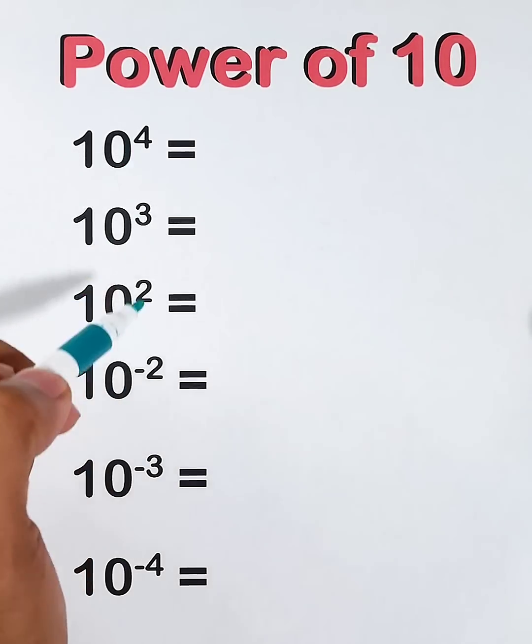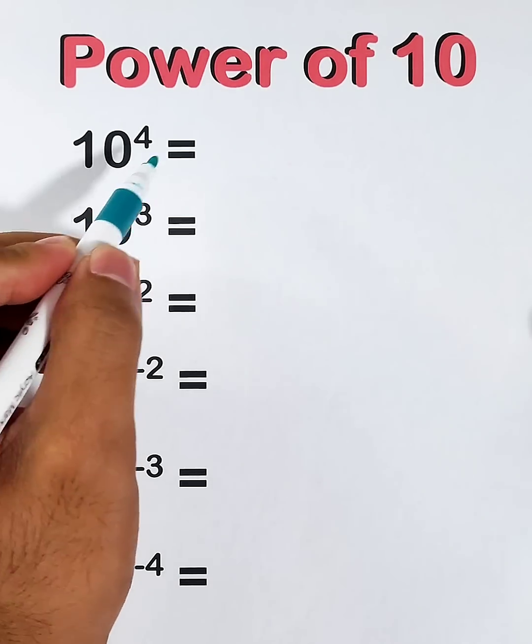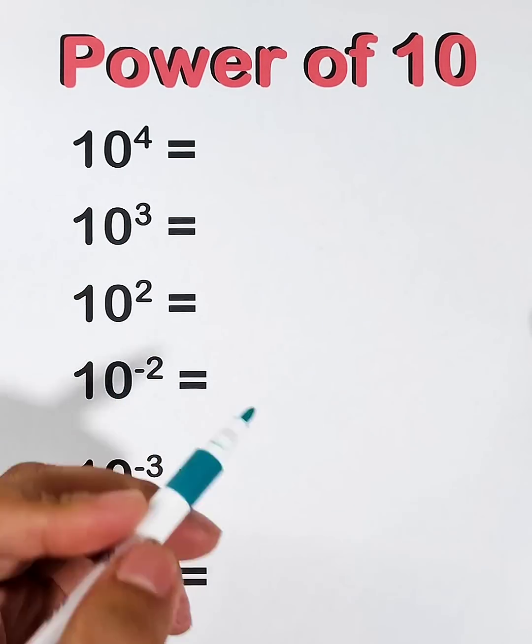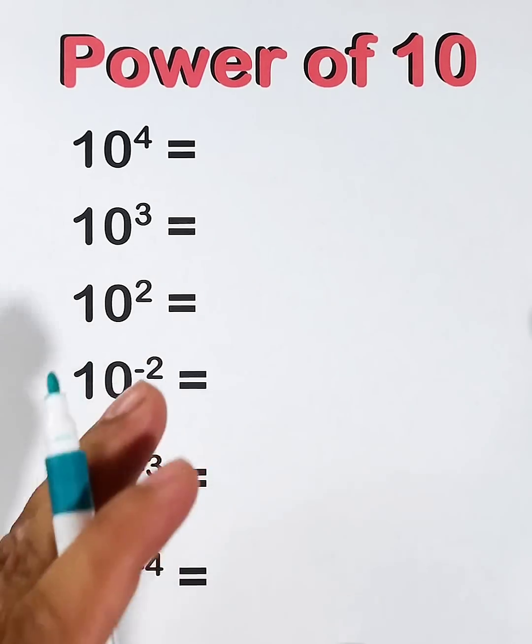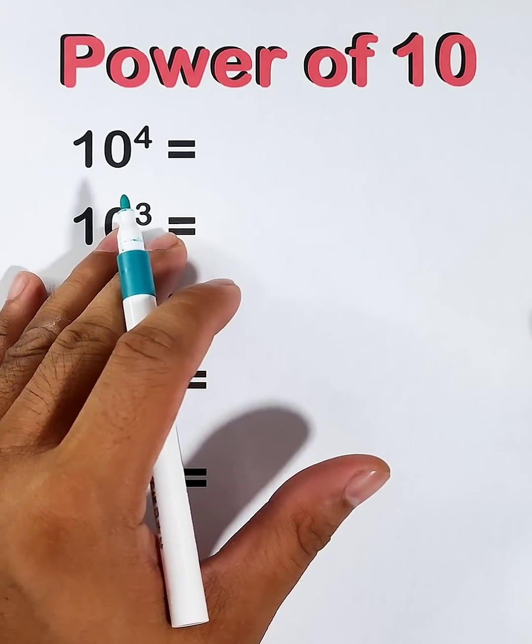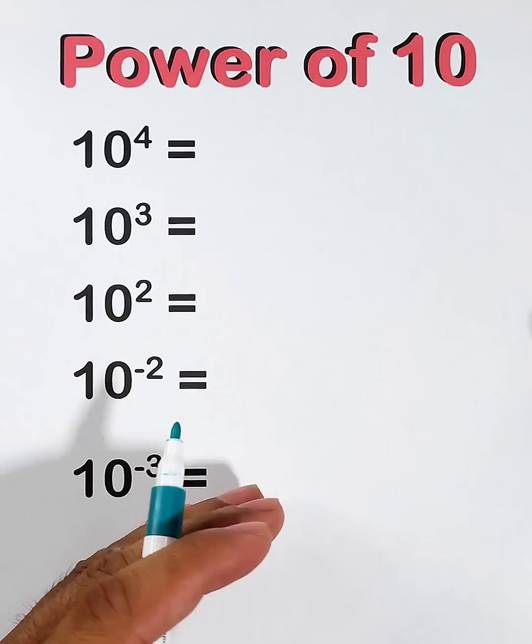We have 10 raised to the fourth power. 10 raised to the fourth power is the same as 10 times 10 times 10 times 10. So the question here is, how are we going to solve this in a fast and easy manner?